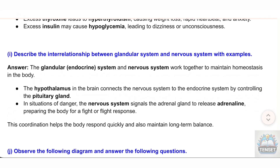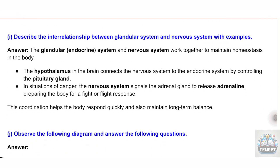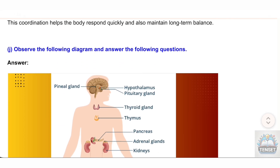I) Describe the interrelationship between the glandular system and nervous system with examples. Answer: The endocrine system and nervous system work together to maintain homeostasis in the body. The hypothalamus in the brain connects the nervous system to the endocrine system by controlling the pituitary gland. In situations of danger, the nervous system signals the adrenal gland to release adrenaline, preparing the body for a fight-or-flight response. This coordination helps the body respond quickly and maintain long-term balance.